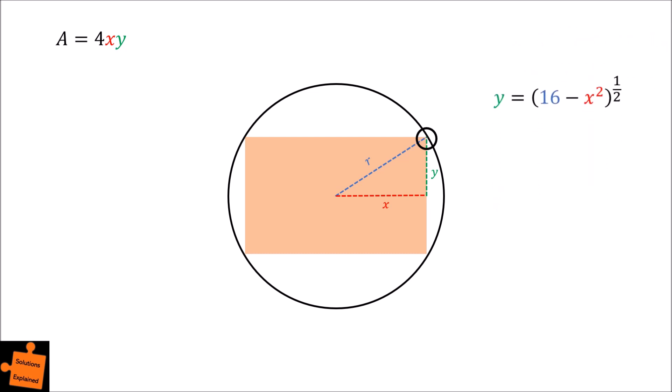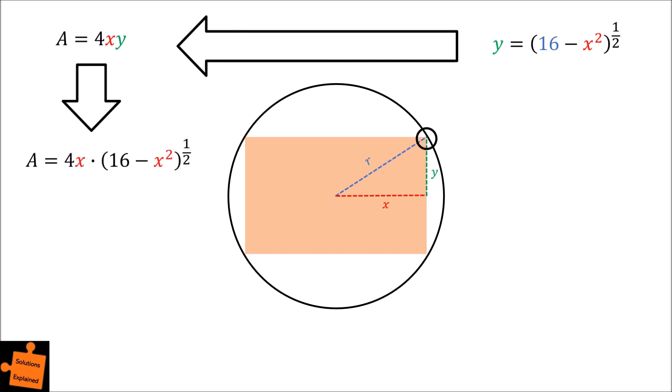If we tidy this up a little, we can now substitute the equation for y into the area equation to eliminate y. In doing this, we obtain the area is equal to 4x multiplied by the square root of 16 minus x squared. In other words, we now have the area of the rectangle written purely as a function of x.